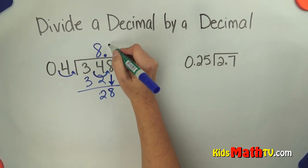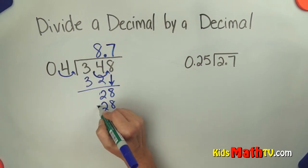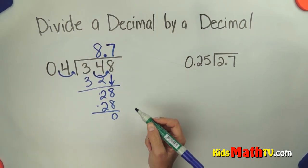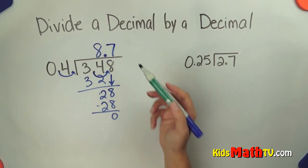How many 4's are in 28? 7. 7 times 4 is 28. Subtract and we get 0. So 3 and 48 hundredths divided by 4 tenths is 8 and 7 tenths.